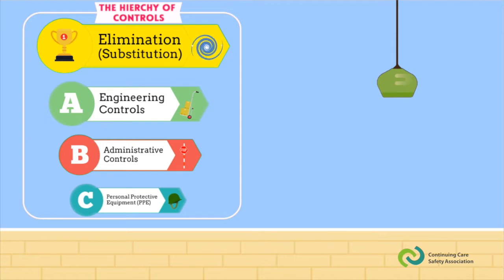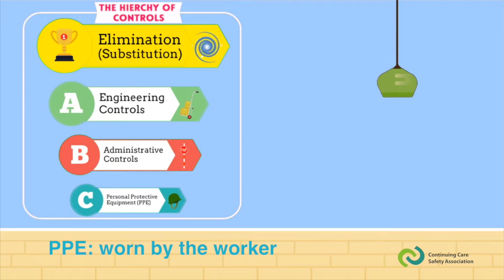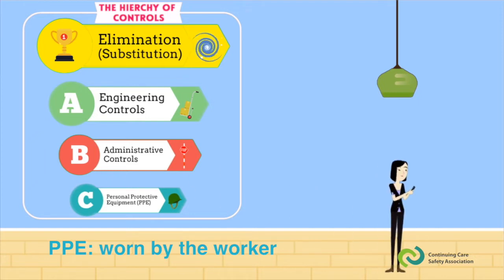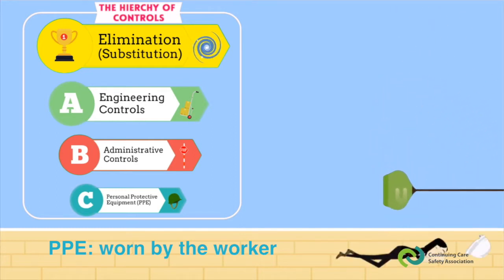The last control on the hierarchy is personal protective equipment. It's the least effective. This control is on the person, reducing the chances of injury when they're exposed to the hazard. Things like gloves, close-toed shoes, and masks. For our lamp example, this would be like giving everybody in the lobby a helmet so that when the lamp comes down, it might save them. You can see why relying on PPE only is a very bad idea.